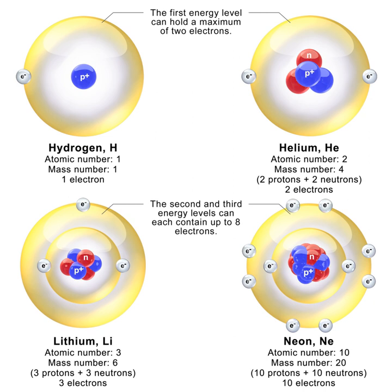In 1938, Otto Hahn, Lise Meitner, and Fritz Strassmann discovered nuclear fission, or the fractionation of uranium nuclei into light elements, induced by neutron bombardment. In 1945, Hahn received the 1944 Nobel Prize in Chemistry for his discovery of the fission of heavy atomic nuclei. The discovery of nuclear fission would lead to the development of nuclear power and the atomic bomb by the end of World War II.